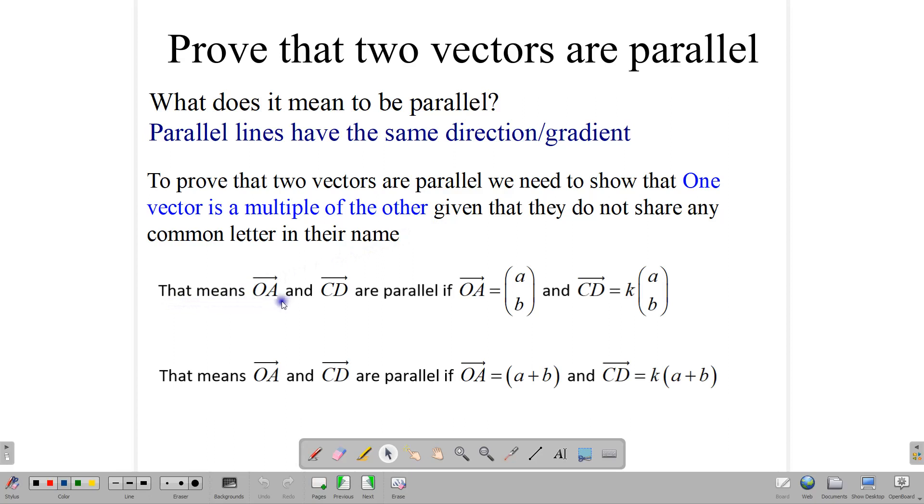So for example, if we have the vector OA and the vector CD, and OA is equal to AB in its component form, and CD is equal to some number multiplied by AB, then we can say that OA and CD are parallel to each other. Also, when we're looking at the vectors in their algebraic form, if OA is equal to some A plus B, and CD is equal to some number K multiplied by A plus B, then that tells us that the vectors OA and CD are parallel. Notice that they do not have any letters in common in their name. As long as that is the case, and you can take a number and multiply it by one vector and get the other vector, then that tells you that the two vectors are parallel.